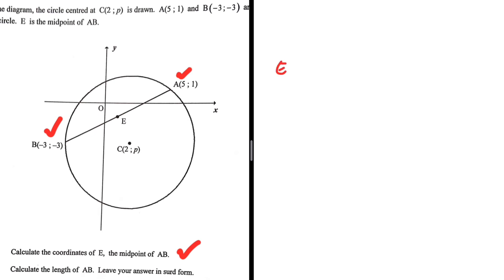E will have coordinates X and Y. In order to find the X coordinate of E, we take the X coordinate of A plus the X coordinate of B divided by 2. And then for the Y coordinate, Y of A plus Y of B, everything divided by 2. That is how you find the coordinates of a midpoint.